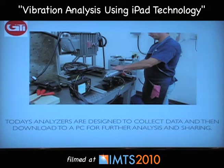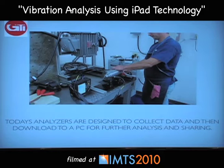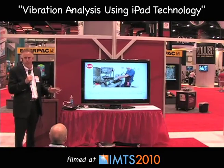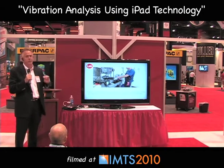Today's analyzers are designed for data collection and they download to a PC. Once all the data is collected around the plant, the technician downloads it into a larger software program, because the analyzer itself doesn't have the software to do the trending analysis needed over months of time across all different points. He would then work in his office to produce a report for his superiors so they can make important decisions — for example, that machine number 53 on the B line is likely to fail, and they need to plan ahead, have all necessary components ready, and fix it on an off-shift to keep production running.